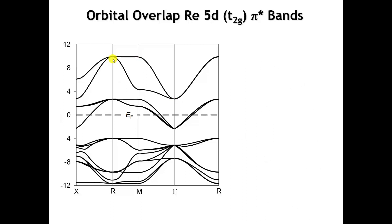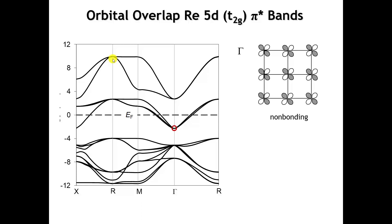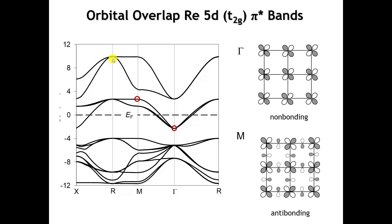Let's now move on to the T2g bands — the pi star bands. At gamma, the dxy orbital by symmetry cannot overlap at all with the oxygen 2p or 2s orbitals, so this band is entirely rhenium 5d non-bonding. The dxz and dyz bands are also completely non-bonding in character, which is why all three bands are degenerate at gamma. Moving to the M point, we can get antibonding pi character, leading to a significant increase in energy. At gamma and at R — where we don't change the phase of the orbital at all from one unit cell to the next, versus R where we change the phase every time we translate by one unit cell in any direction — these three orbitals are degenerate at both of those points.